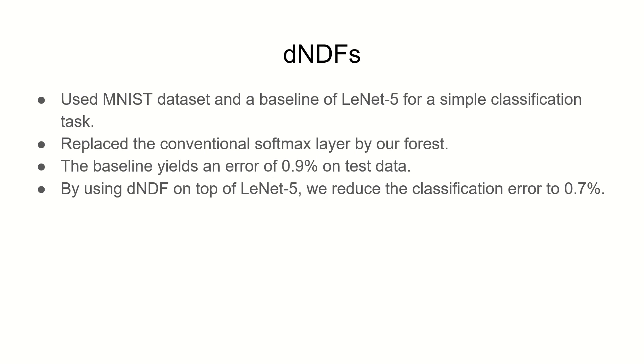Now for deep neural network decision forest, they chose MNIST dataset and a LeNet-5 as a baseline for simple classification. They replaced the softmax layer of LeNet-5 with the decision forest that we discussed in this paper. While the baseline gives an error of 0.9% on test data, with our modified model that is reduced by 0.2%, making it 0.7% classification error, which is very hard to achieve at that area of accuracy.